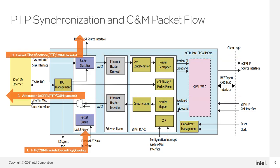This slide highlights the PTP synchronization and CNM flow. One: the PTP and CNM packet are presented to the IP through the external streaming sync interface — this is also the interface used for other non-eCPRI message packets — and the packet is presented directly to the packet queue. Two: the IP forwards the packet to the MAC interface for transmission. Three: on the receive side, the packet classifier block parses the packet, detects that it is either a non-eCPRI packet or an eCPRI packet with a non-matching MAC address, and routes it to the external streaming source interface. When the external streaming source or sync interface are used, no additional processing is performed by the IP core, so all processing must be performed by user-defined fabric logic.